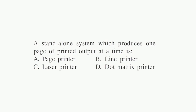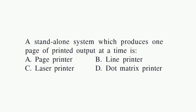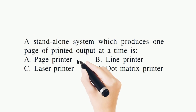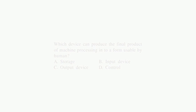Which printer prints a whole page at one time? Line printer is a line printer. Dot matrix uses dots. Laser uses a beam. But page printer is the right answer — it prints a whole page at once.